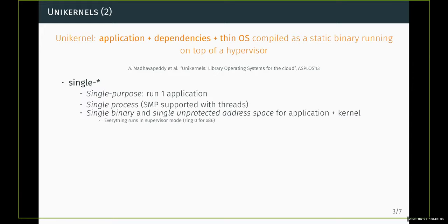In a unikernel environment, we run one application per unikernel — so one application per virtual machine. It's a single process virtual machine and a single address space virtual machine, which means that the kernel and the application share a single address space. In a unikernel, that address space is unprotected, meaning both the kernel and the application execute in ring zero.